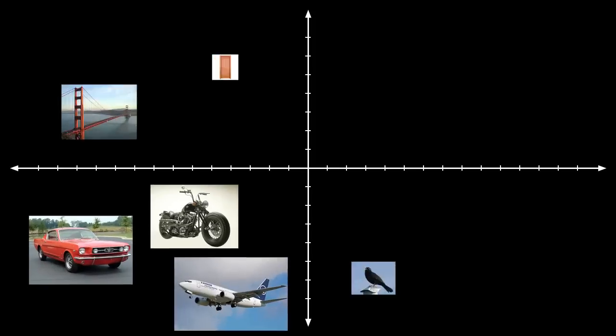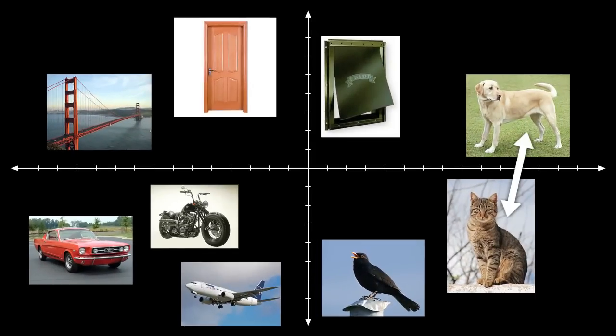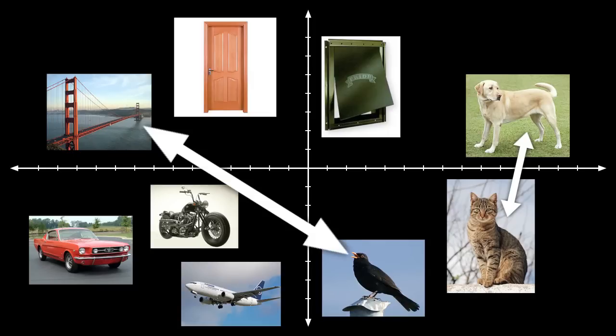But how can we extend this idea to all the thousands of categories that we can see? One way would be to use a semantic space, where nearby categories are semantically similar, but distant categories are semantically very different. So what does the brain's semantic space look like? Which of the thousands of categories that we can see are represented similarly in the brain and which aren't?